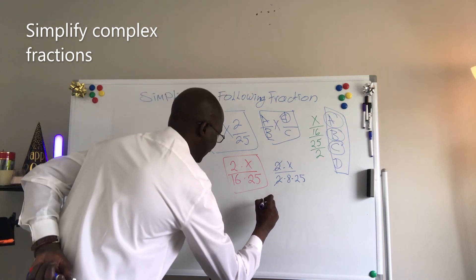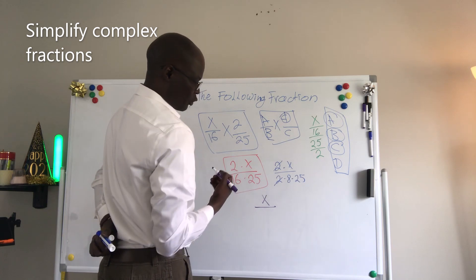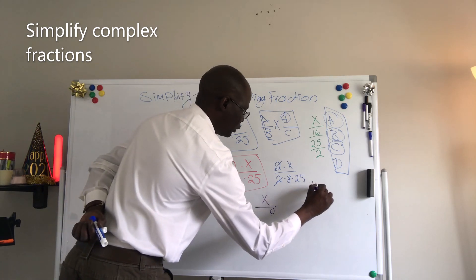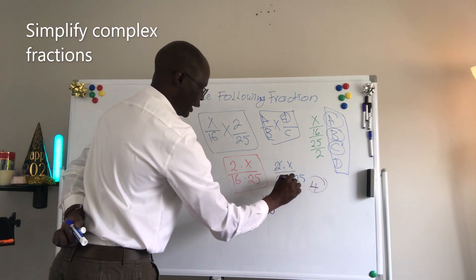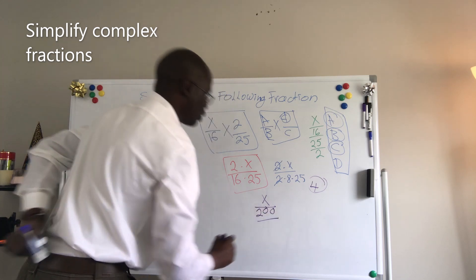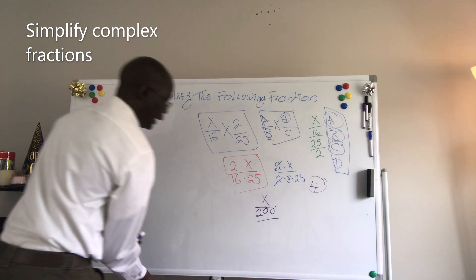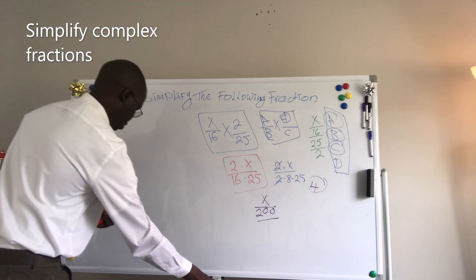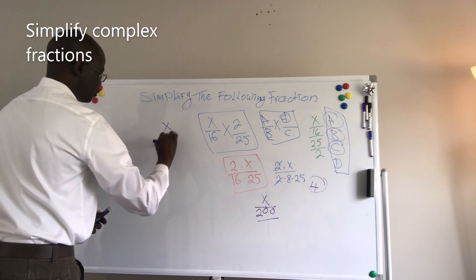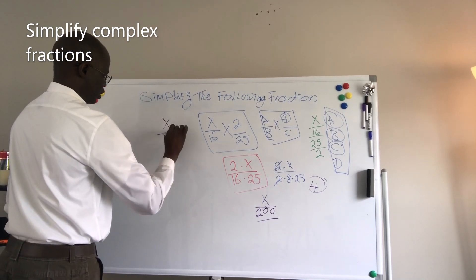2 will cancel with 2, and you will see remaining x divided by, so 8 times 25 is what? We have 8 times 5 is 40, so we carry 4. 8 times 2 is 16 plus 4 is 20. So it's 200. The answer is x divided by 200.